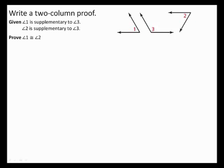Write a two column proof. Given angle 1 is supplementary to angle 3 and angle 2 is supplementary to angle 3, prove angle 1 is congruent to angle 2.